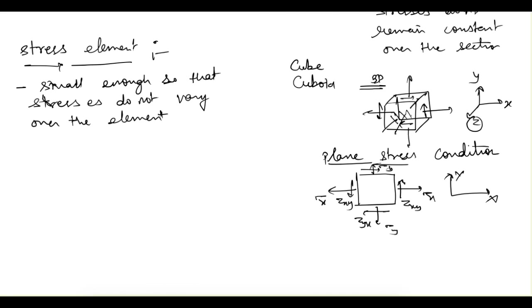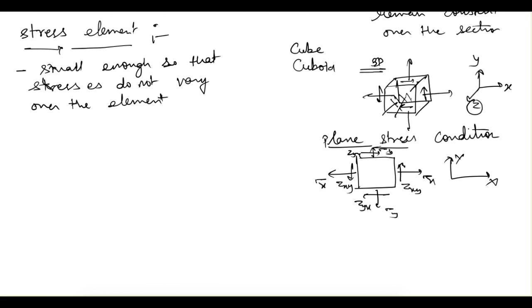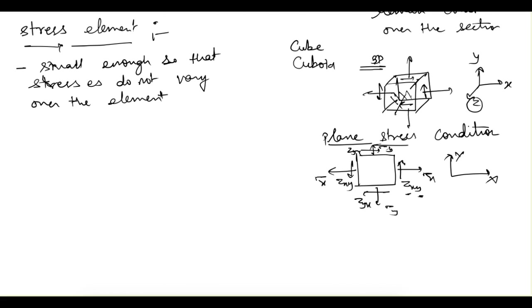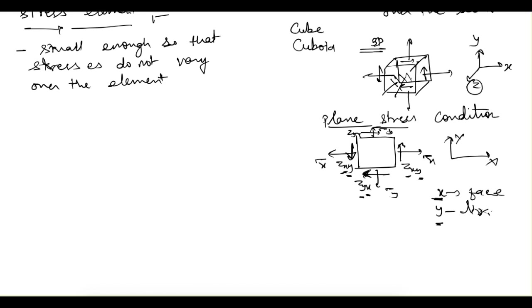We also have shear stresses: tau_xy on one pair of faces and tau_yx on the other. The notation works as follows — tau_xy means it is on the x-face and acting in the y-direction; the first subscript defines the face and the second defines the direction. So tau_yx means it is on the y-face and acting in the x-direction.